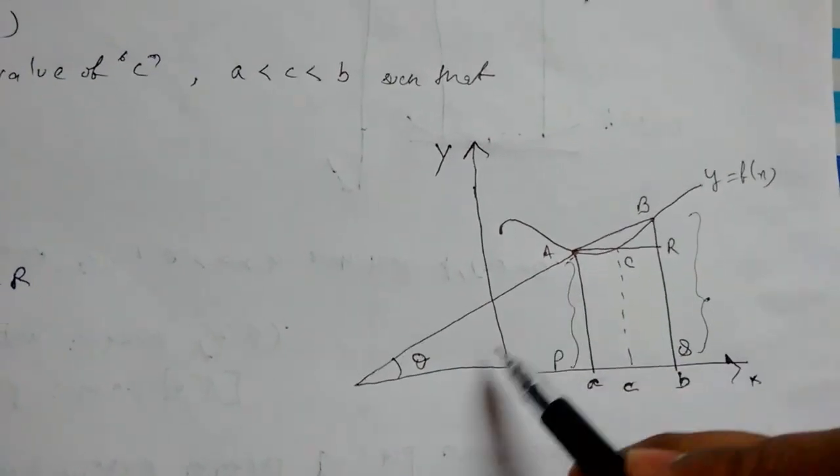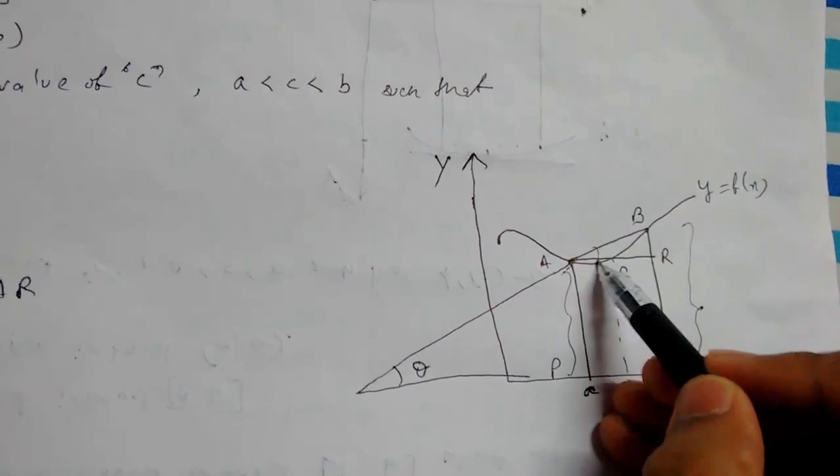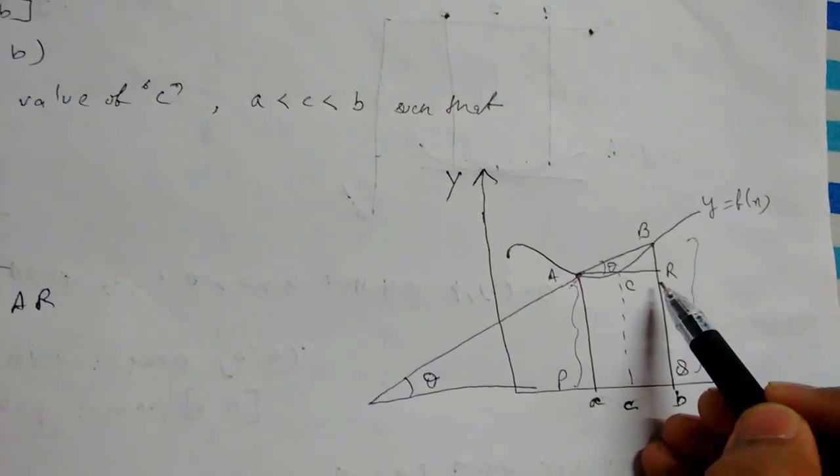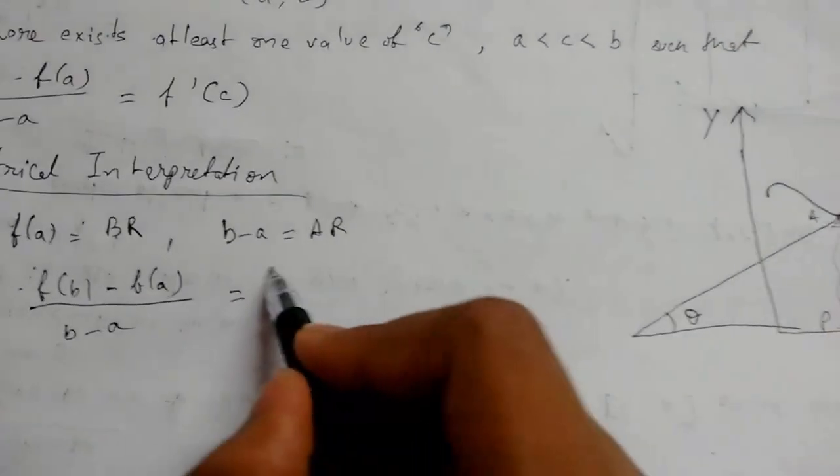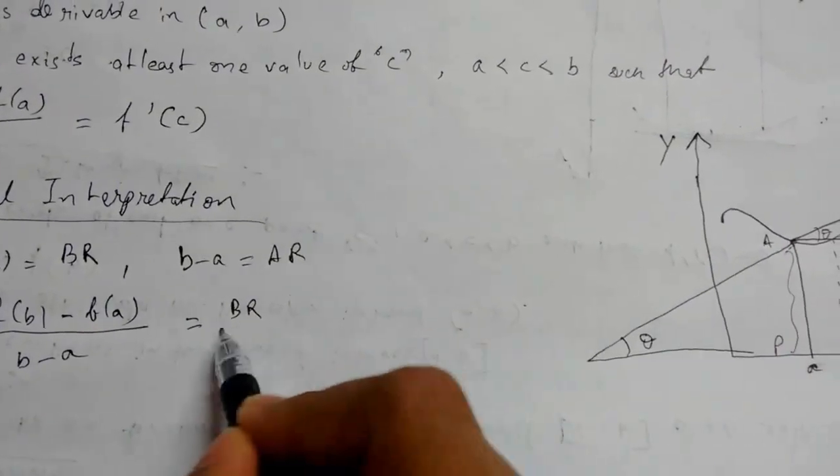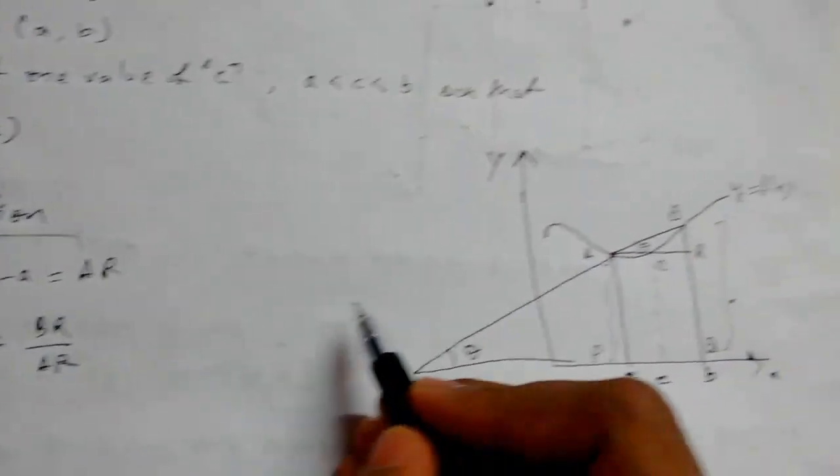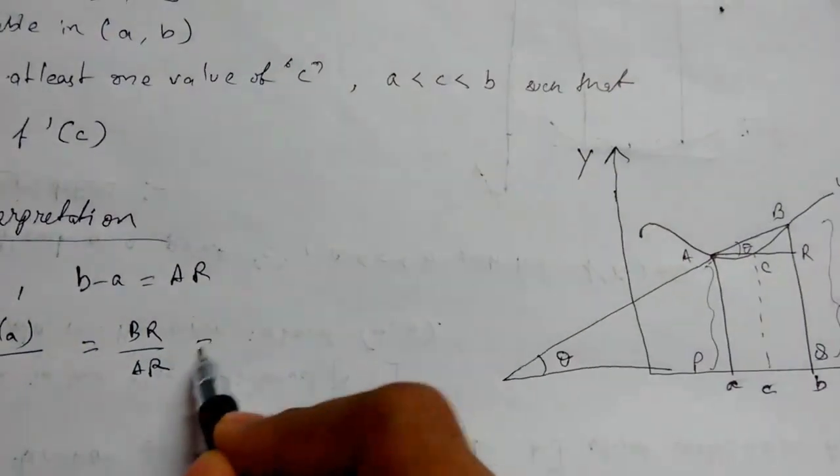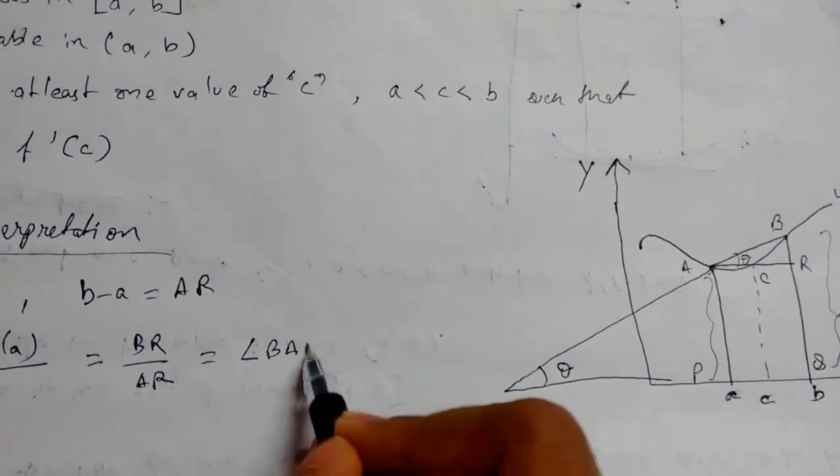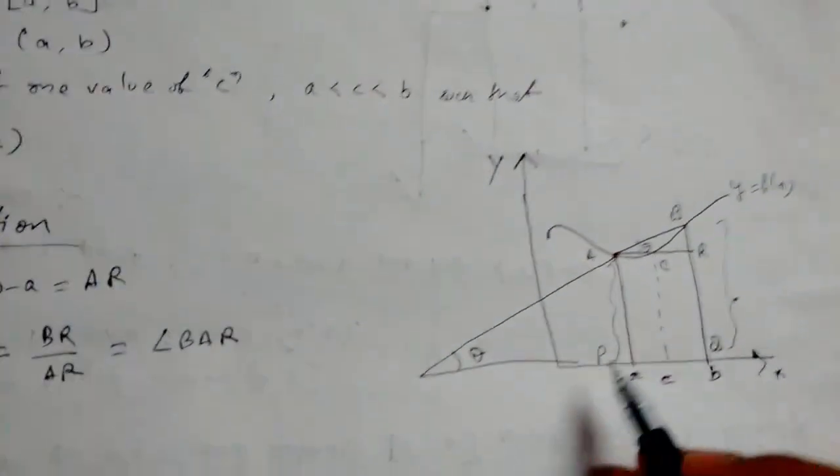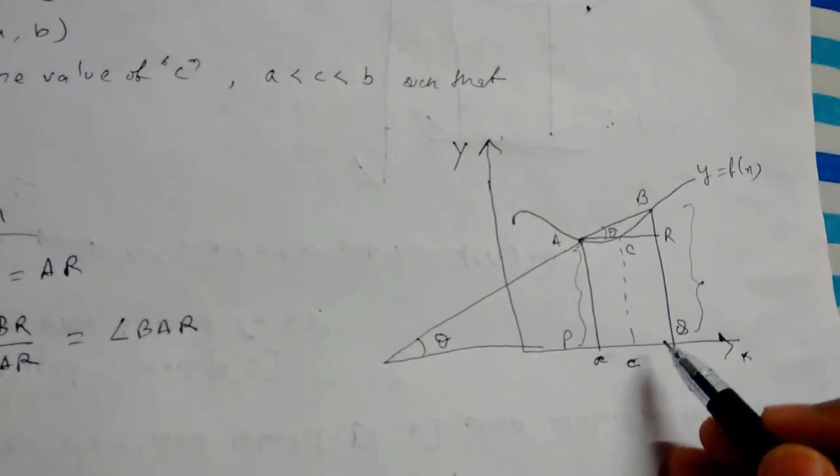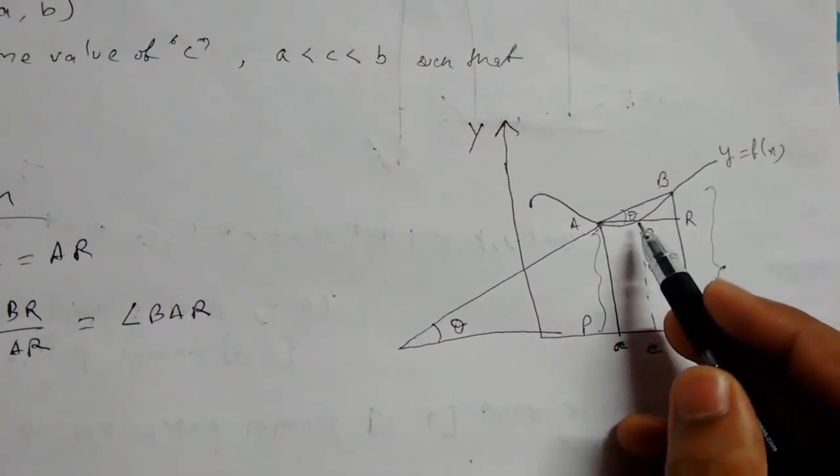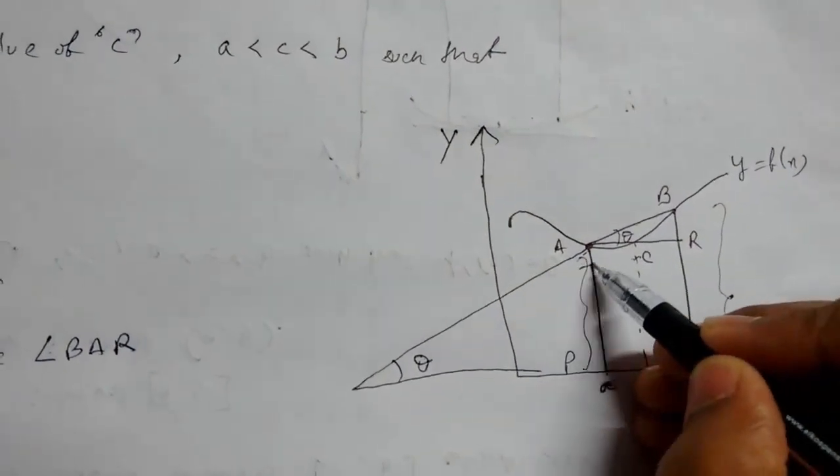Hence [f(b) - f(a)] / (b - a) is equals to, let us see. So let us consider this triangle. This will also be theta, so this will be our BR upon AR, tan theta, BR upon AR, which will also be equal to angle BAR. Angle BAR. Again we know that at point c, f'(c) is equals to tan theta. f'(c) is equals to tan theta.